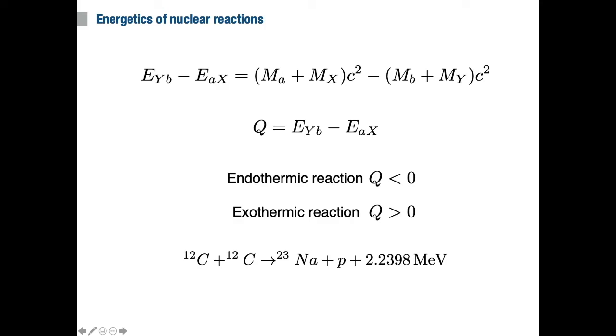Sometimes, the combination of two carbon nuclei give a magnesium-23 nucleus and a neutron instead. This reaction consumes 2.6 MeV of energy, and therefore, it is an endothermic reaction.